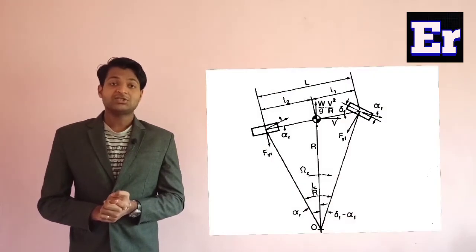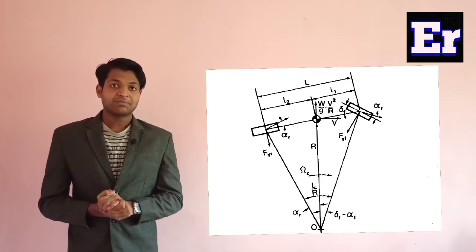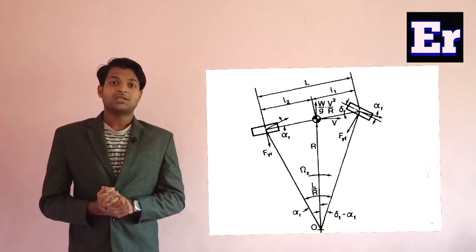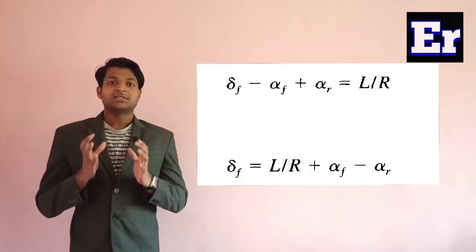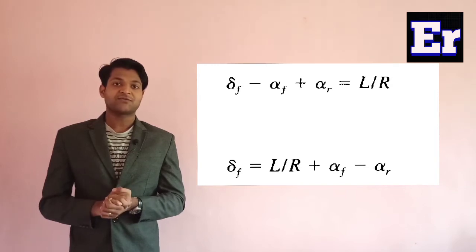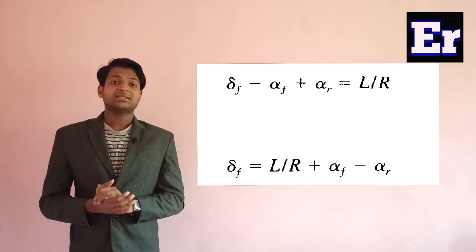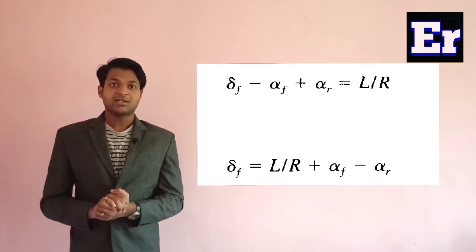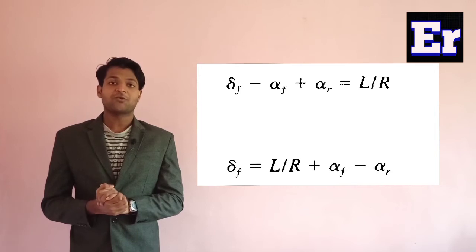As you can see in this figure on the left side, for simplifying the derivation we are adding up the slip angle and cornering force for each axle and considering only two tires instead of four. From this, we can write the steering angle delta as equal to L/R plus alpha-f (the slip angle at the front wheels) minus alpha-r (the slip angle at the rear wheels). This means that as the rear slip angle increases, we need to steer less for a particular radius R, and as the slip angle reduces, we have to steer more.